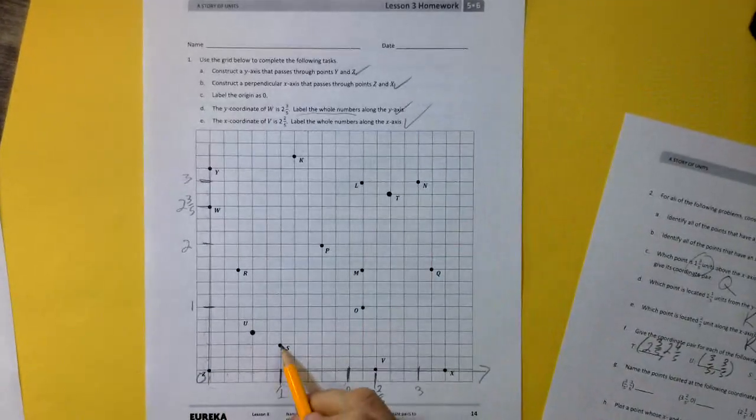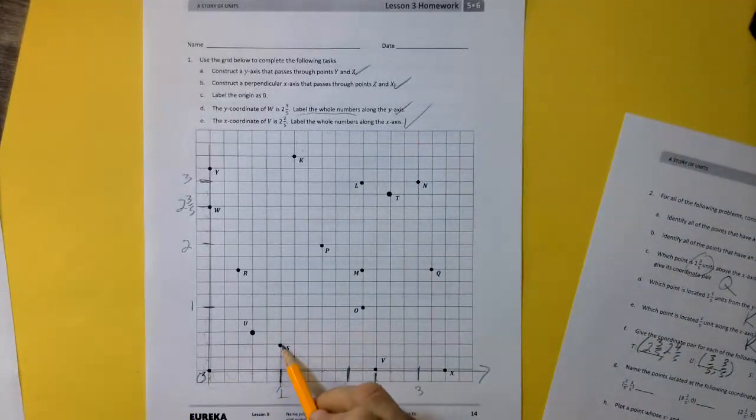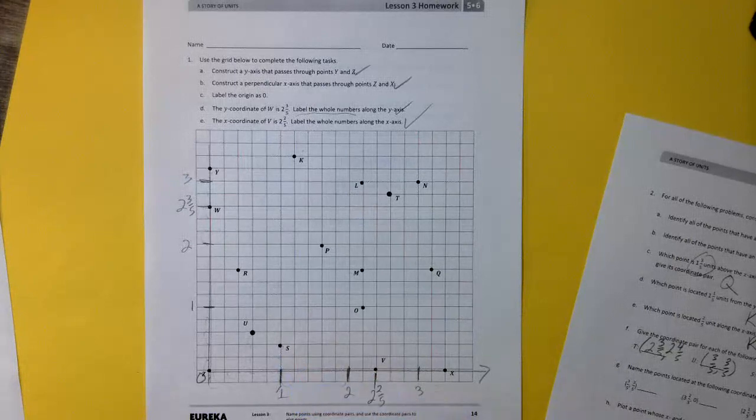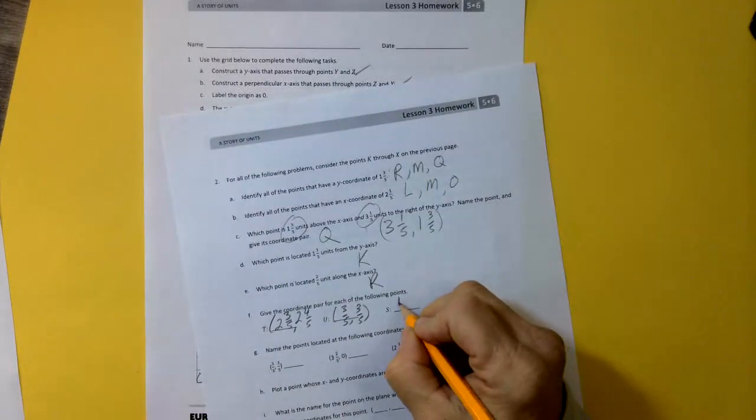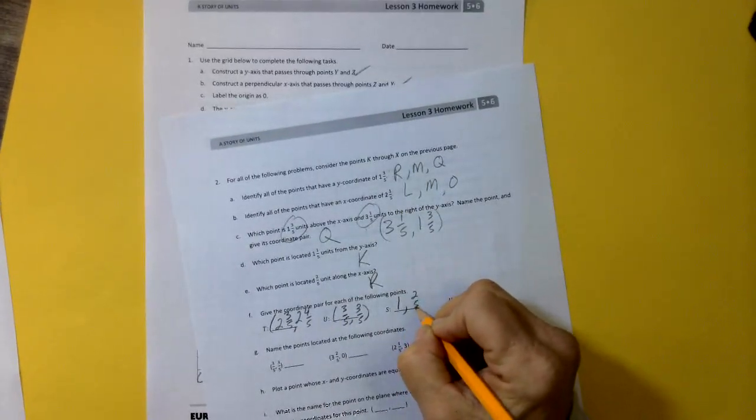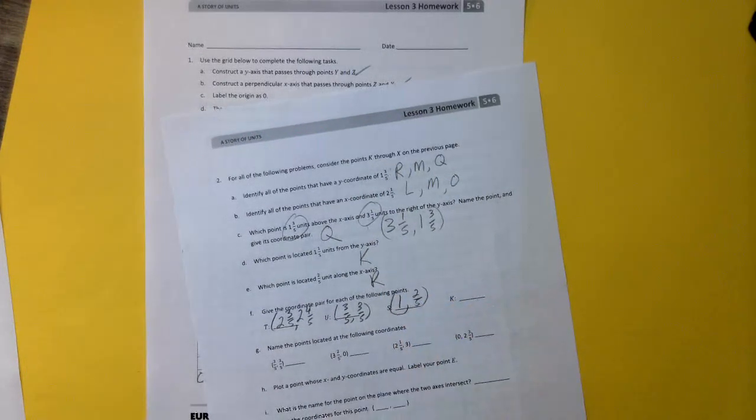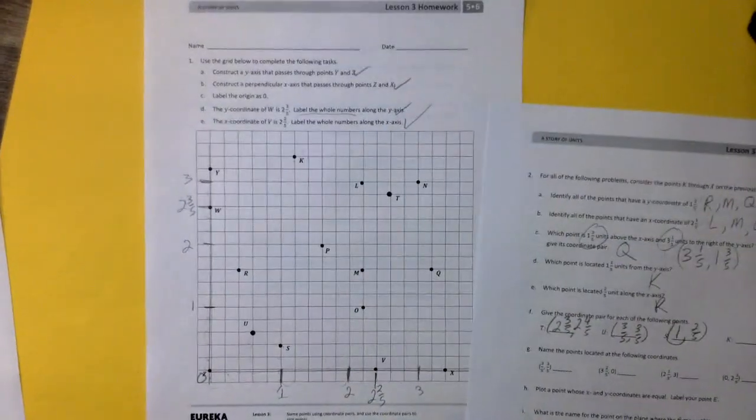S. S is right here. It's over 1 and up 2 fifths. 1 fifth, 2 fifths. So over 1 and up 2 fifths. Remember, you want to go over first and then up.